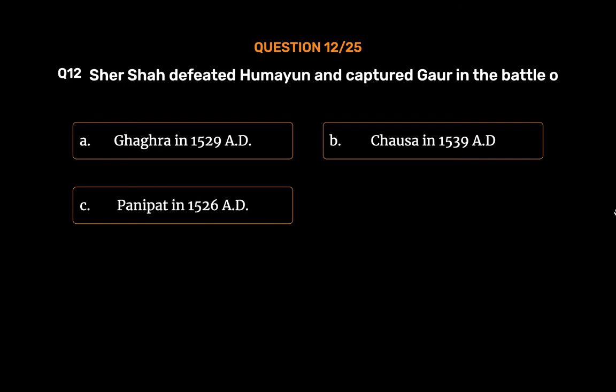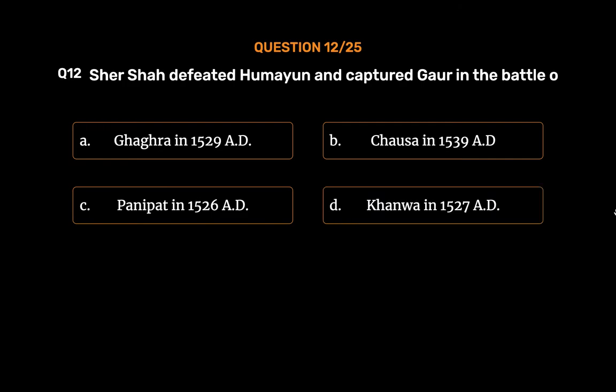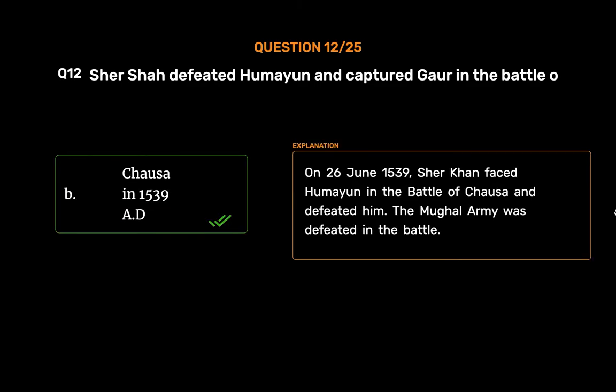The correct answer is Option B, Chausa in 1539 AD. On 26 June 1539, Sher Khan faced Humayun in the Battle of Chausa and defeated him. The Mughal army was defeated in the battle.